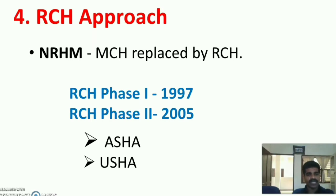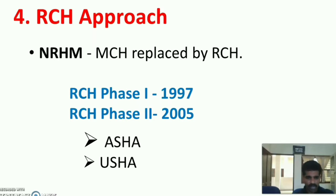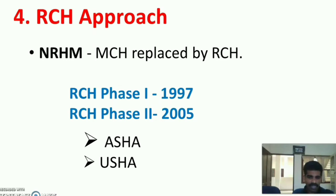The fourth approach is the RCH (Reproductive and Child Health) approach. This is a package of services. In 2005, the Government of India started the National Rural Health Mission. MCH programs were replaced by RCH services. There are two phases: RCH Phase 1 started in 1997, and Phase 2 in 2005. USHA workers serve in urban areas and ASHA (Accredited Social Health Activist) workers in rural areas, providing RCH services at the peripheral level.